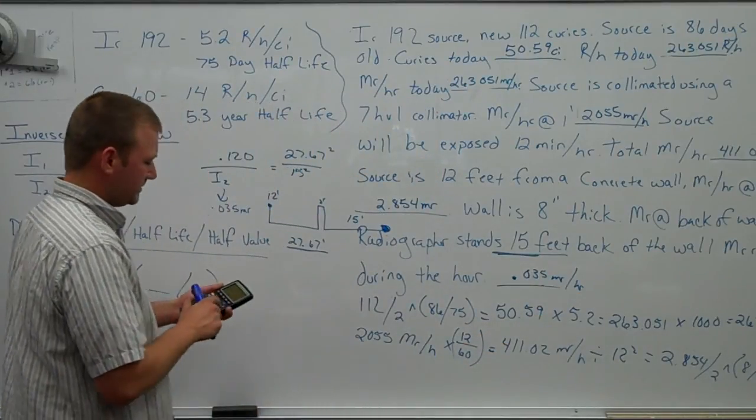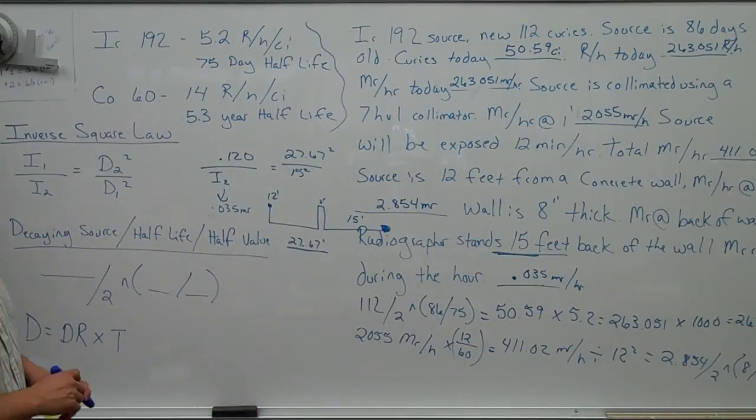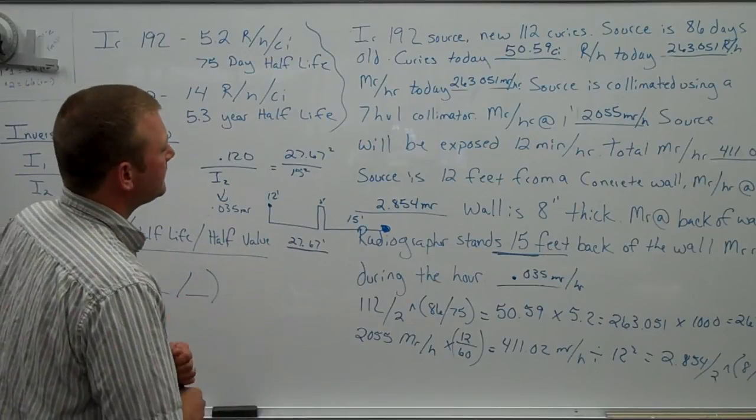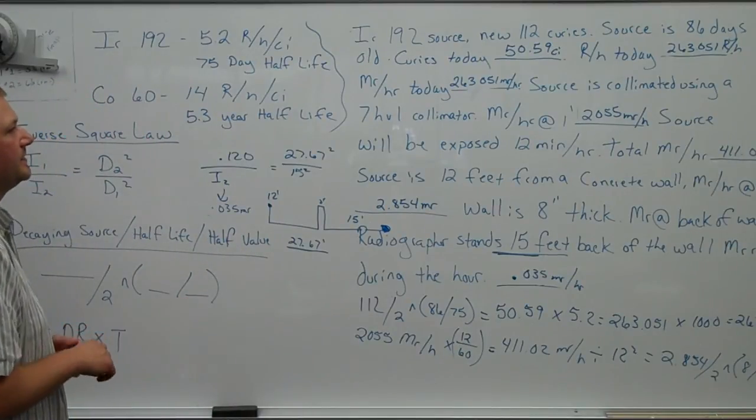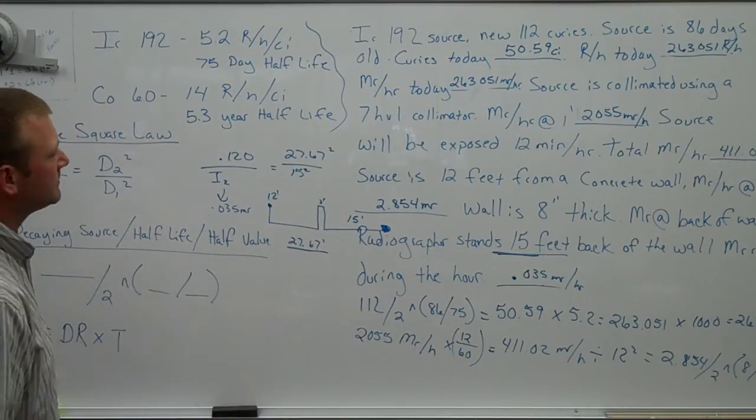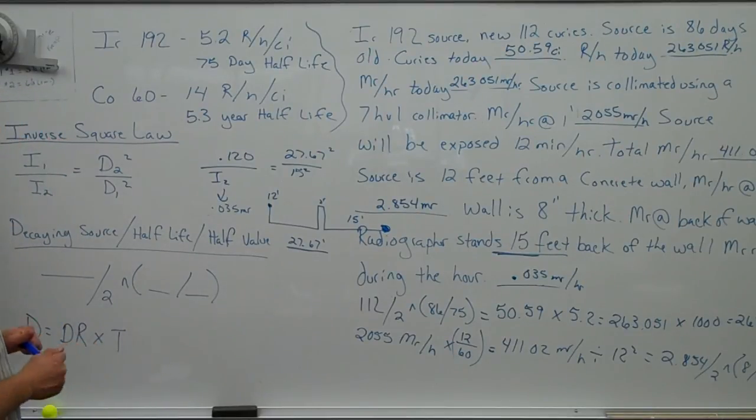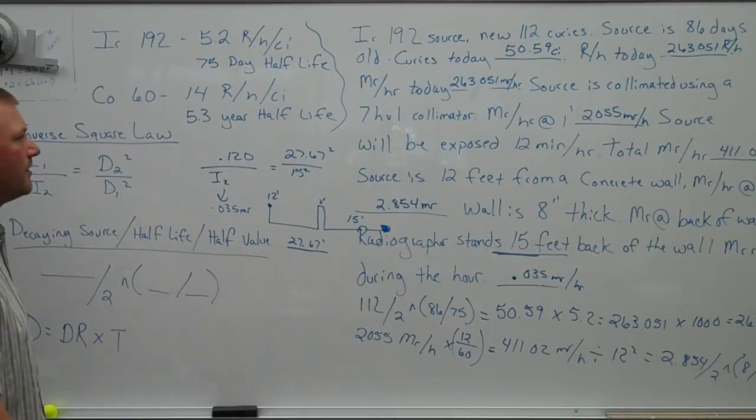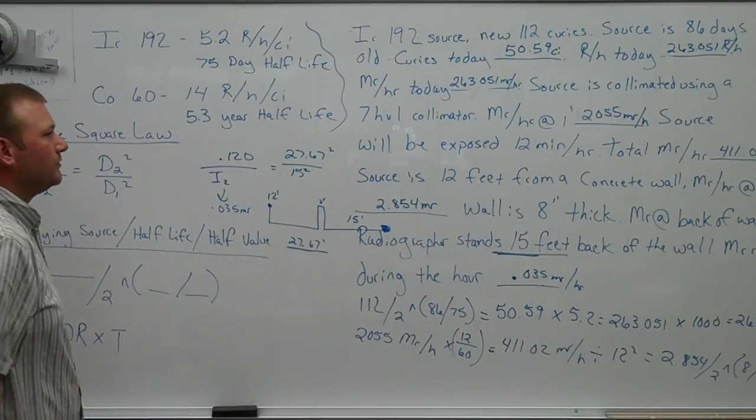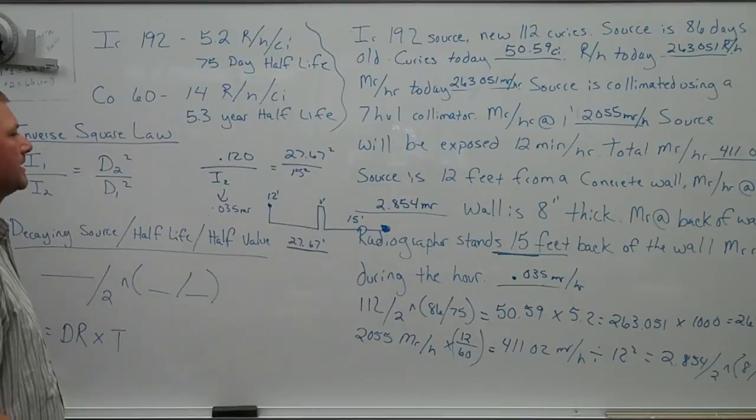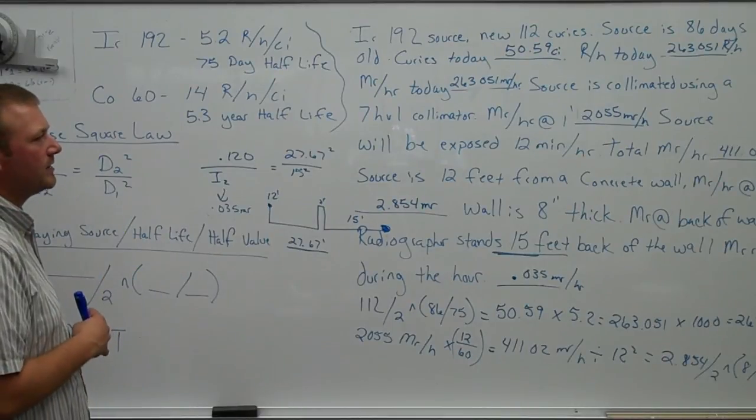So that whole problem said this. If we had a worker, he was using the iridium 192. It was 112 curies, 86 days old. We have 50 curies roughly today. That converts to 263 Rankins, 263,000 milliRankins. We slap a collimator over the top of it. That drags it down to about 2,000 mR.